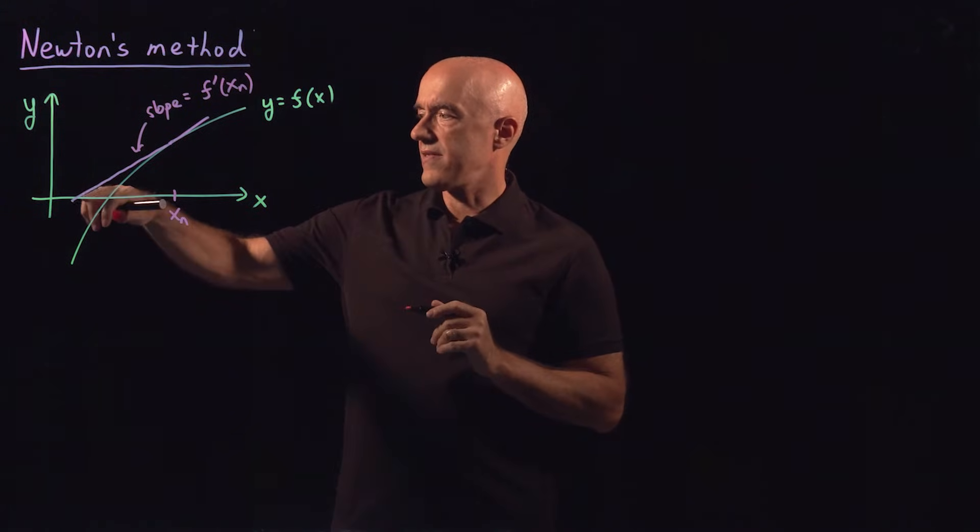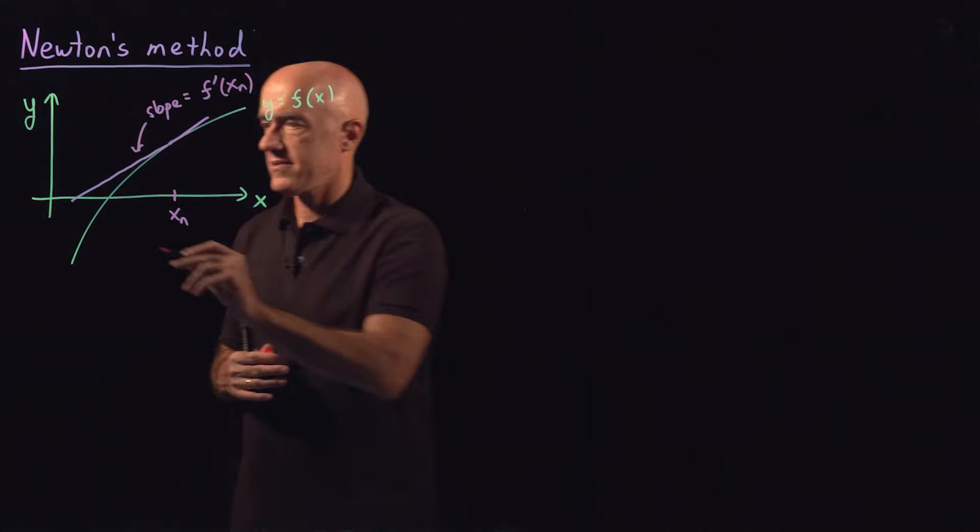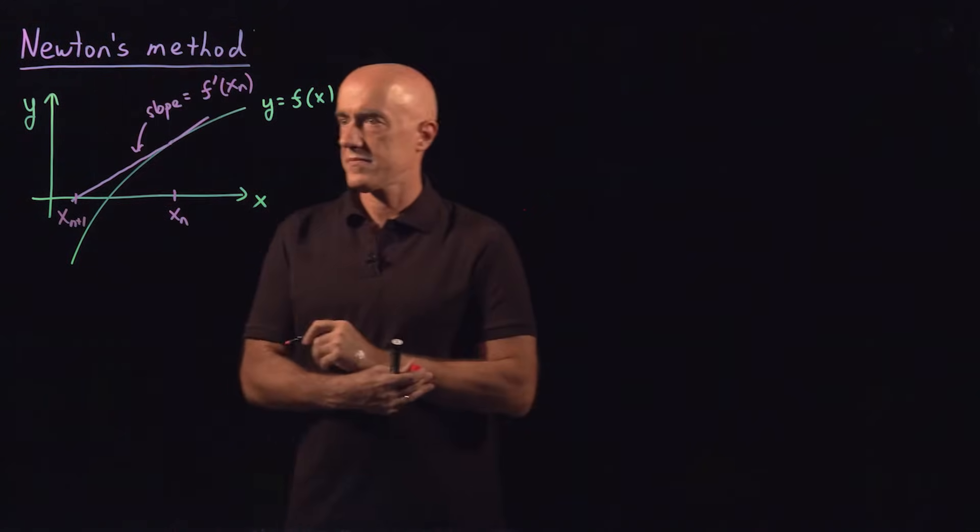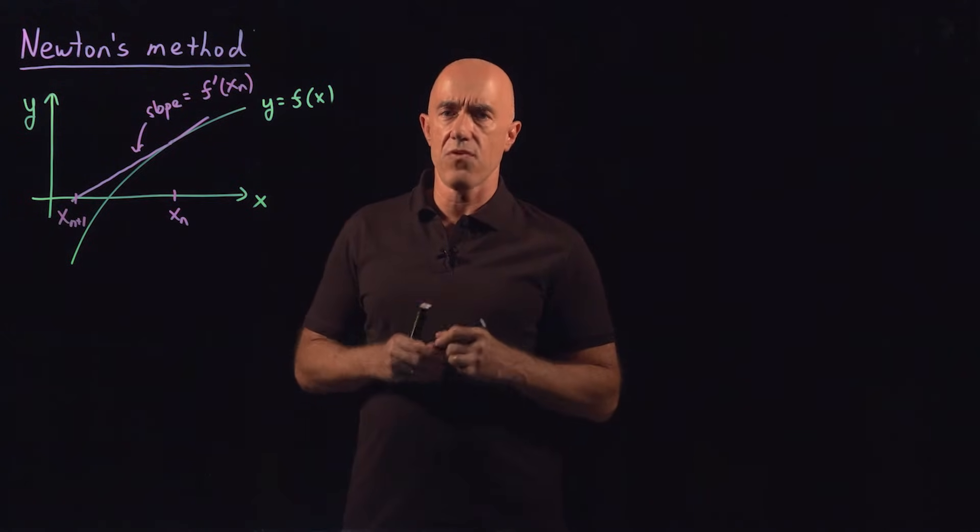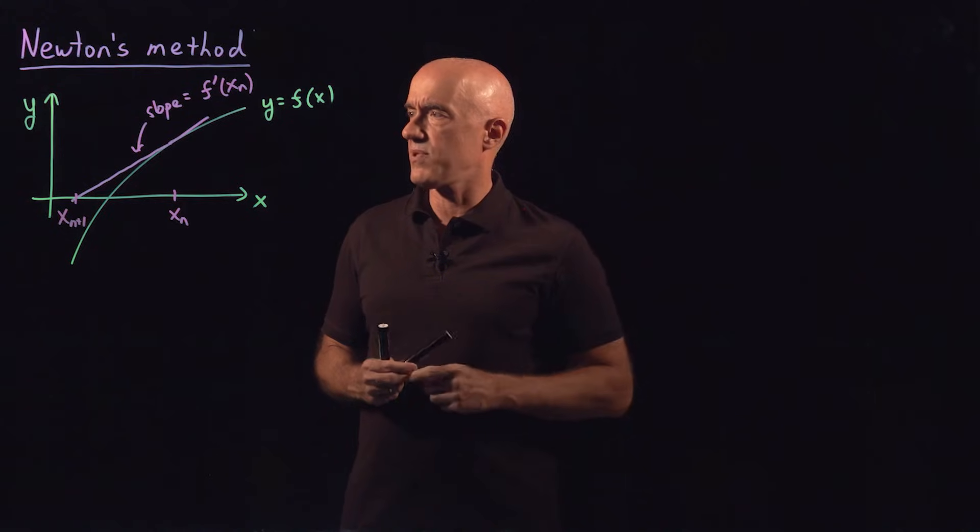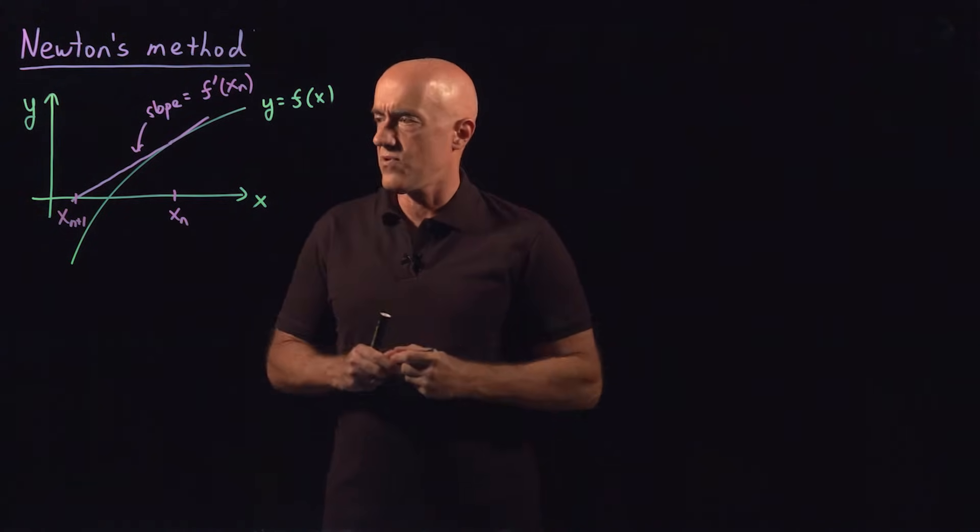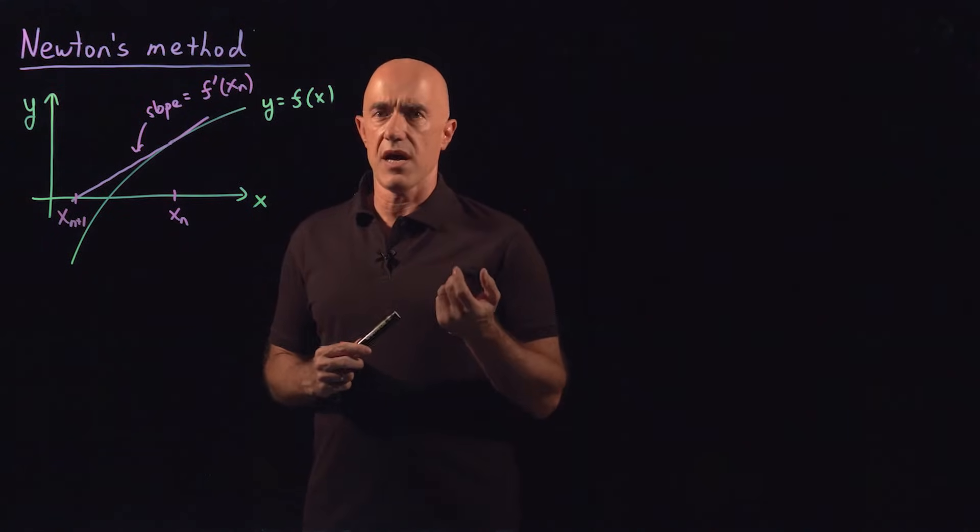And then the point of intersection with the x axis here will become our next guess for the root, x_{n+1}. So we want to calculate a formula then for x_{n+1}. So we need to write down the equation for this line. So what's the equation for the line?